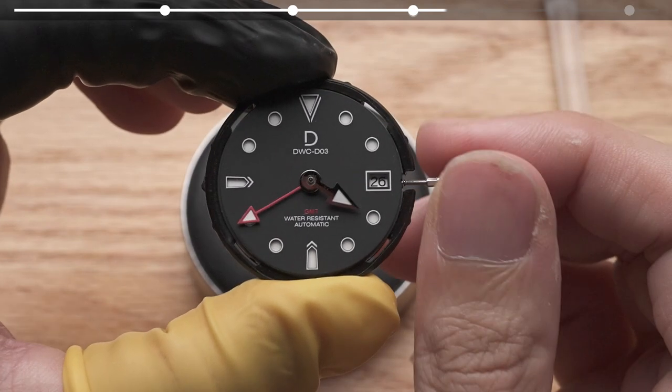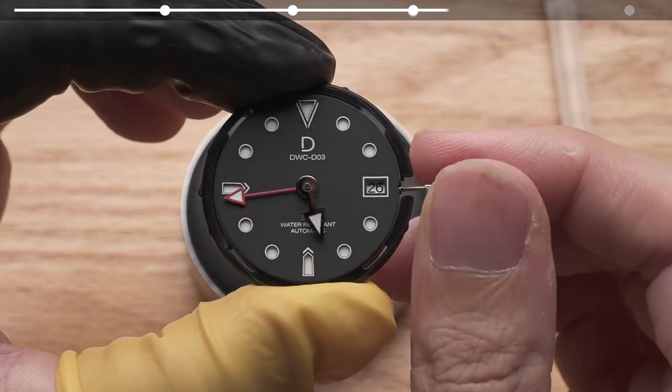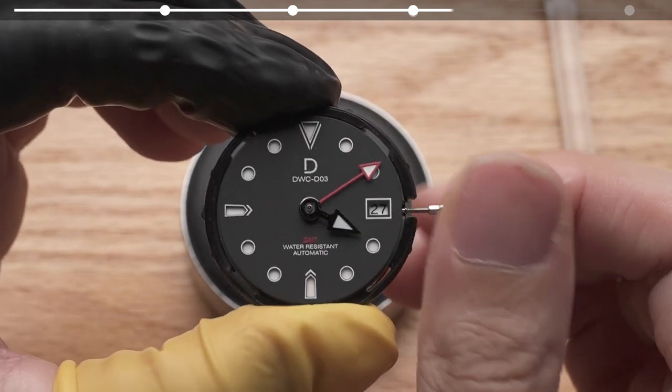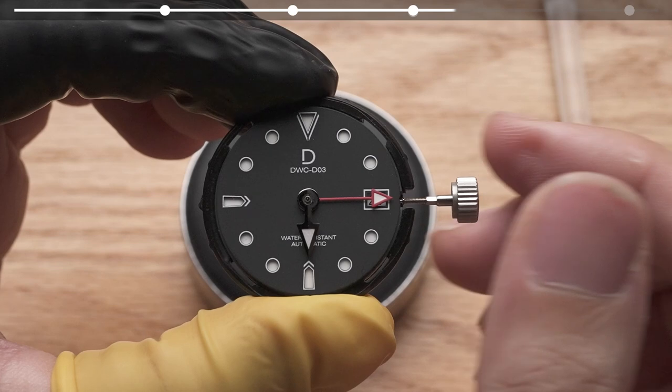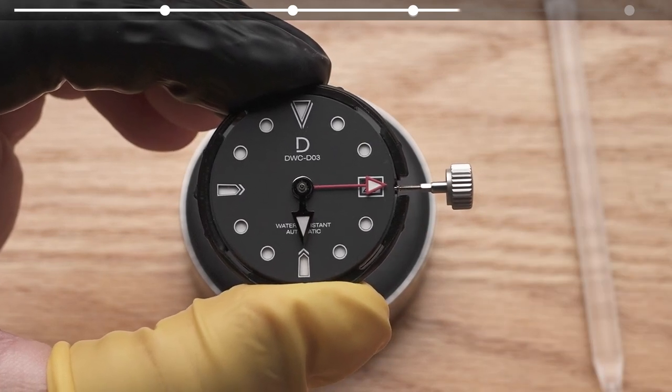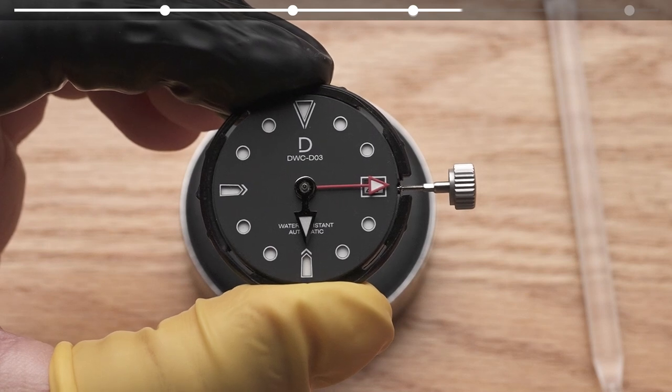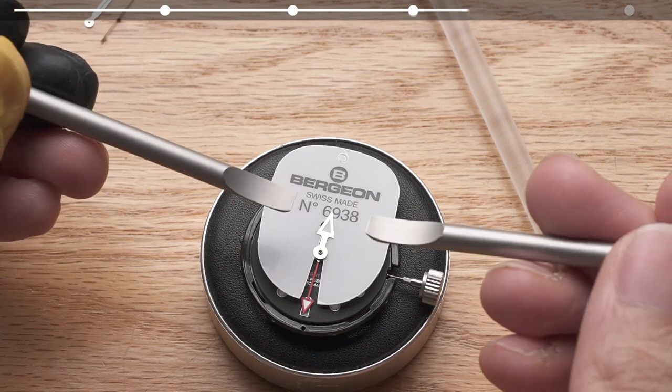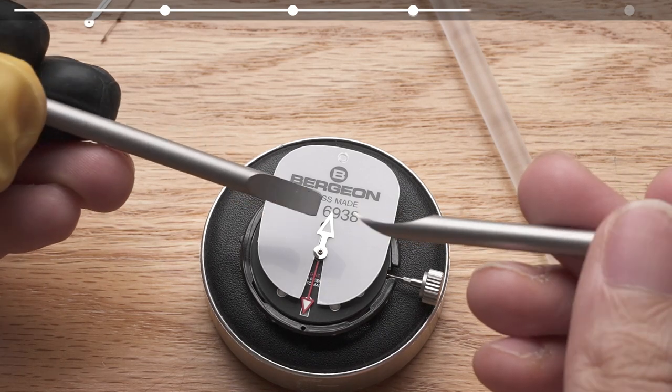You should see the hour hand pointing at 6 o'clock while the GMT hand points at 9 o'clock. Advance the time by another 12 hours. Now the hour hand should be again at 6 o'clock while the GMT hand is at 3 o'clock. If the alignment is off, as your hour hand is loosely attached, you can remove and reset your hour hand as shown.